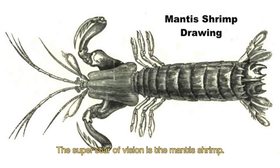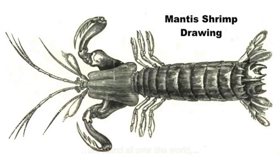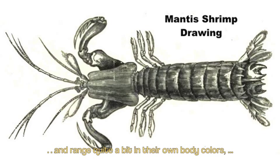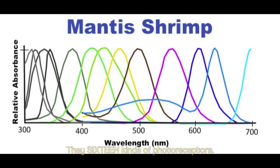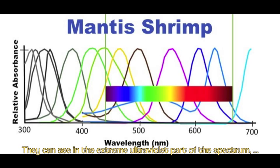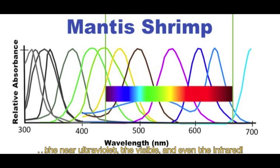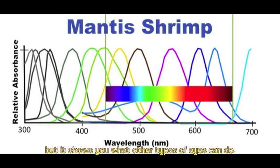A superstar of vision is the mantis shrimp. They're about a foot long, found all over the world, and have quite vivid body colors. But that doesn't matter — they have 16 photoreceptors, 12 of which are for scene color. They can see in the extreme ultraviolet, the near ultraviolet, the visible, and even the infrared. This is an extreme example of what compound eyes can do, as well as their limitations.